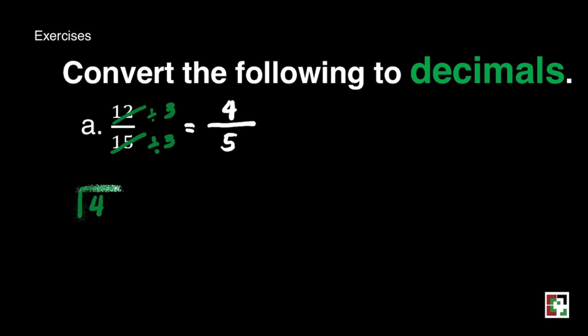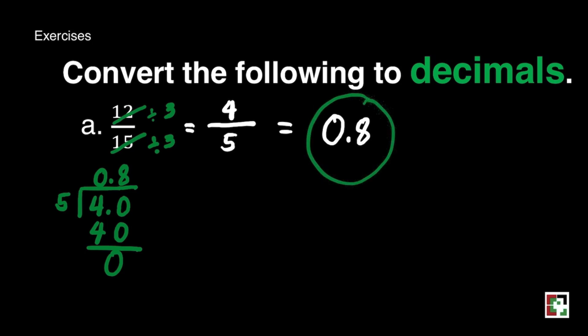How to change it to decimal? Just divide the numerator by its denominator. So we get 4 divided by 5 is equal to 0.8 or 8 tenths. And that is our final answer.